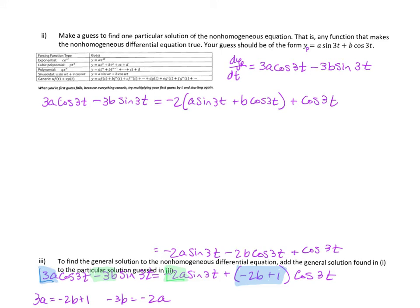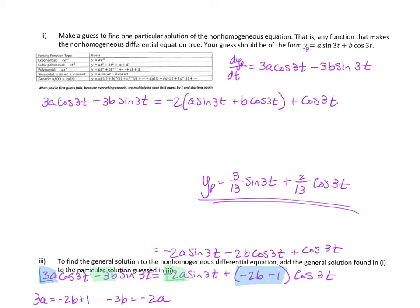So y particular is a sine 3t plus b cosine 3t with a equals 3/13 and b equals 2/13. That is y particular equals 3/13 sine 3t plus 2/13 cosine 3t. Step 3: the general solution is the sum of the homogeneous solution and the particular solution. So y general equals k e to the negative 2t plus 3/13 sine 3t plus 2/13 cosine 3t.